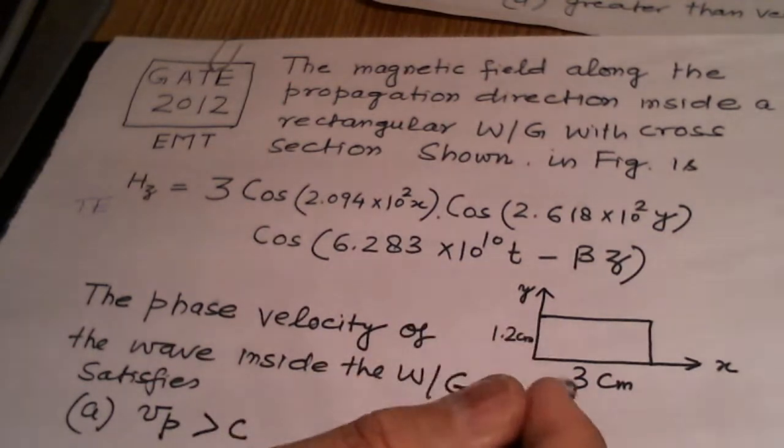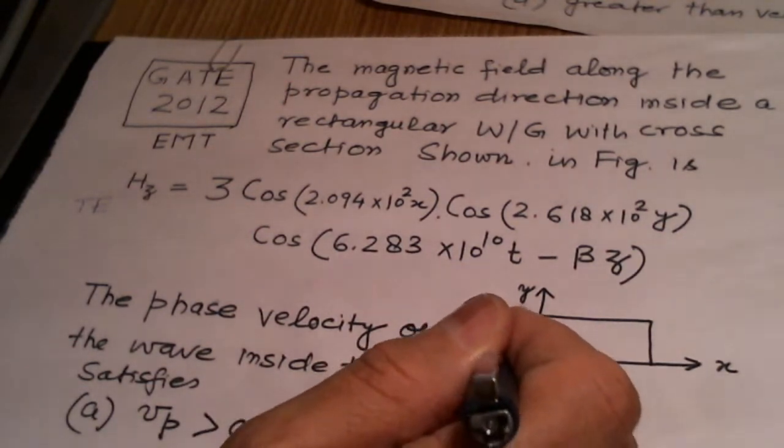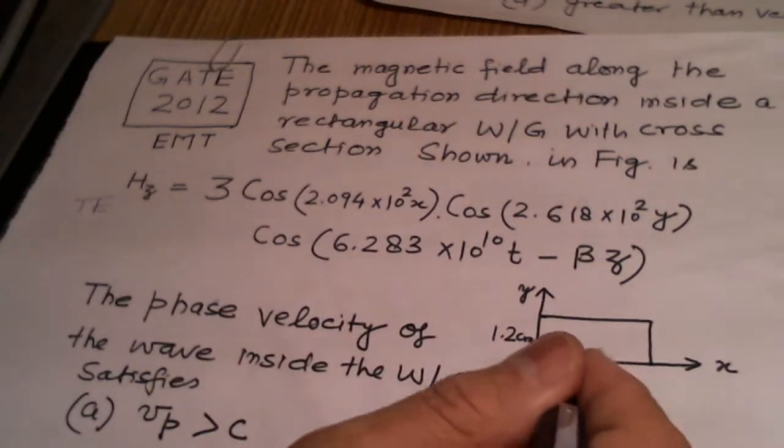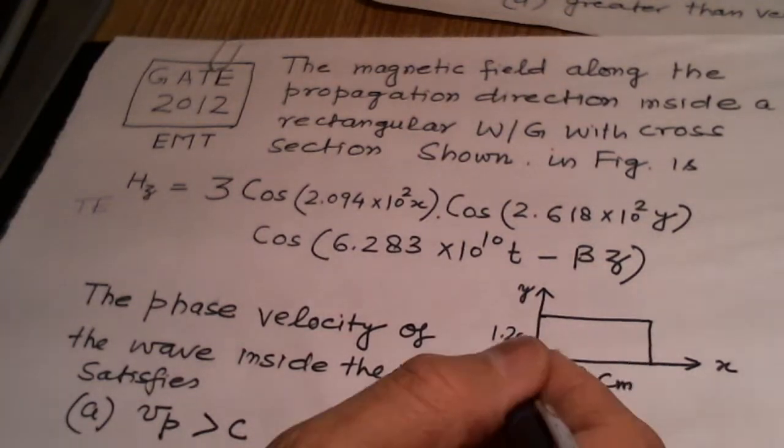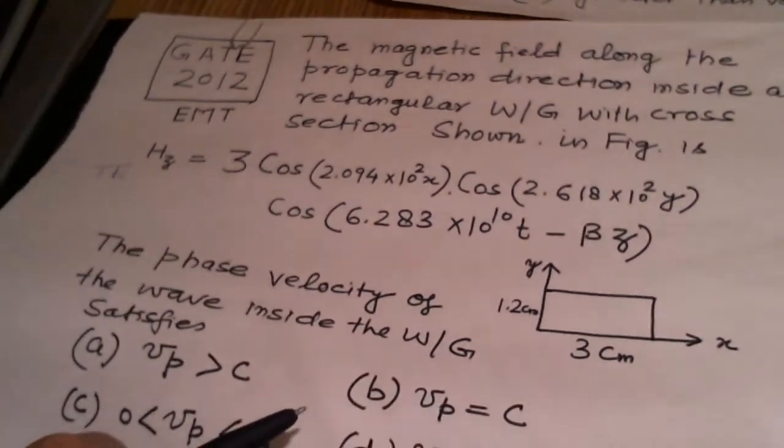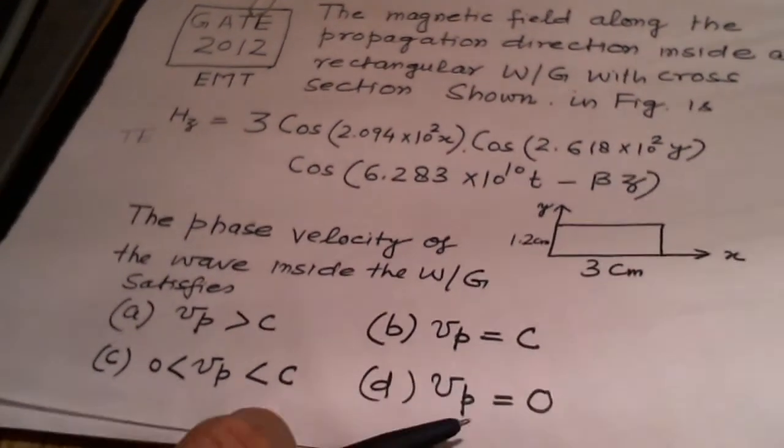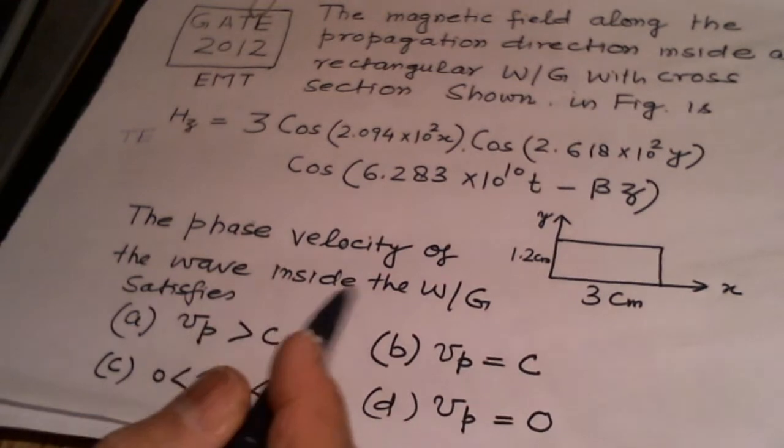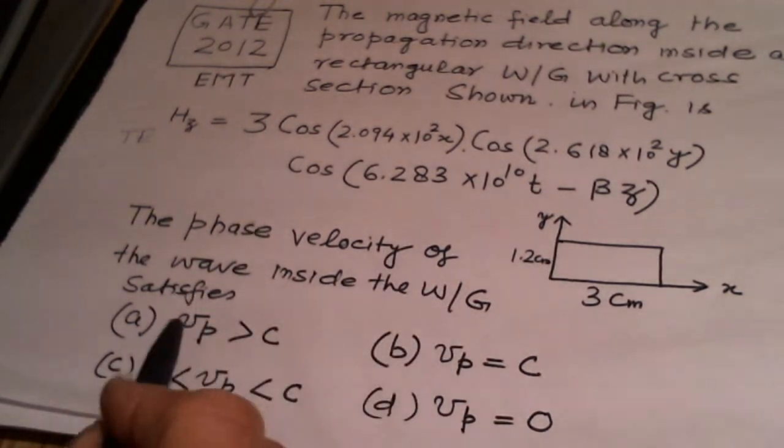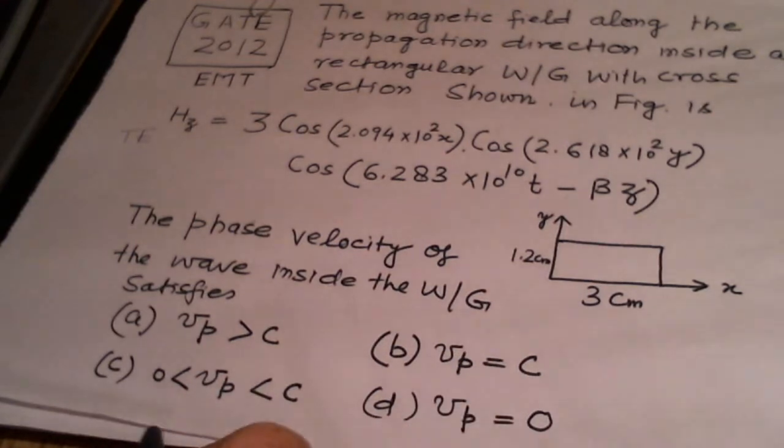So all three problems are dealing with the rectangular waveguide in TE mode. The data for this 2012, like dimension of the waveguide, 1.2 centimeter narrow dimension, 3 centimeter the wide dimension, they are all not really required to solve the problem. We have to see here the phase velocity of the waveguide inside the waveguide satisfied: Vp greater than C, Vp equal to C, or Vp less than C.